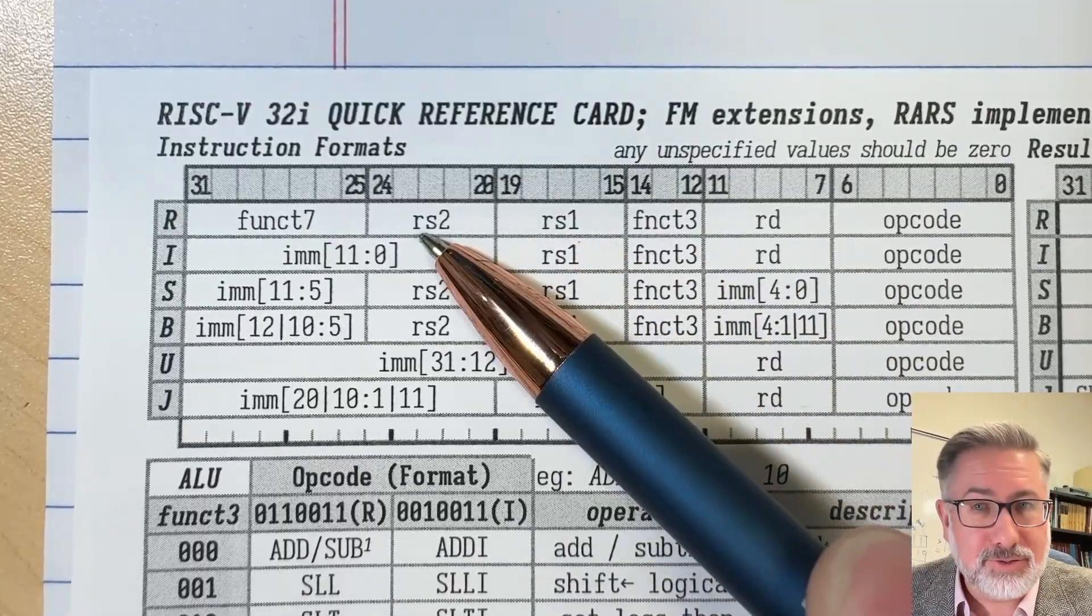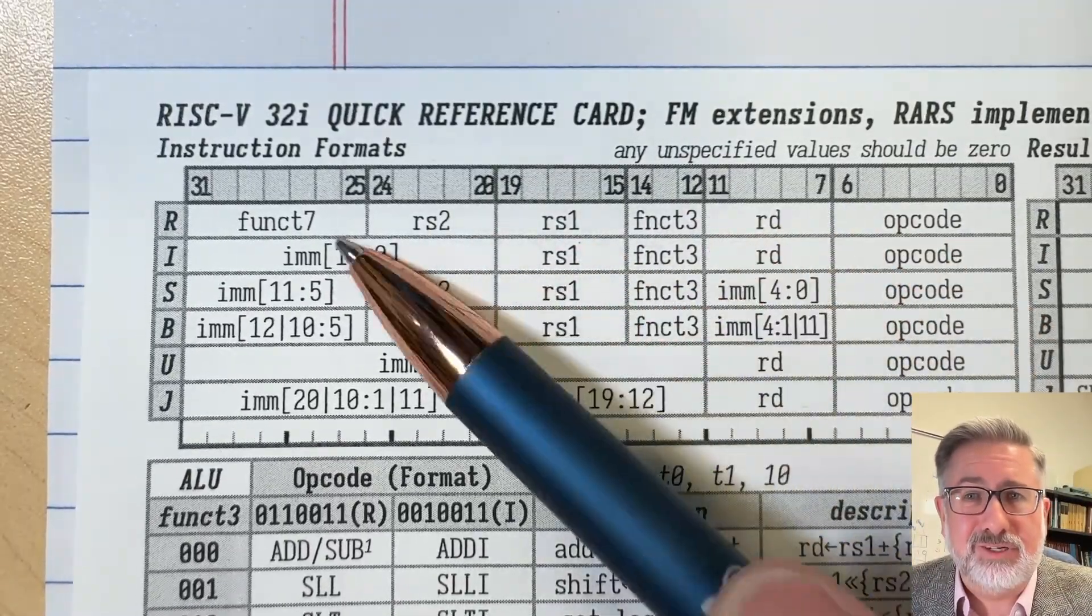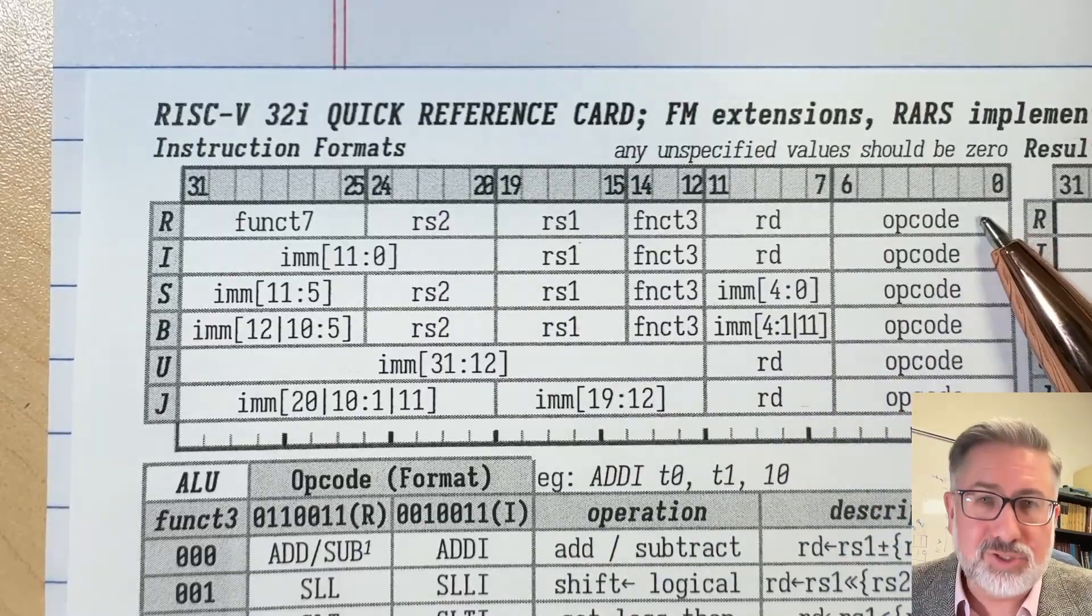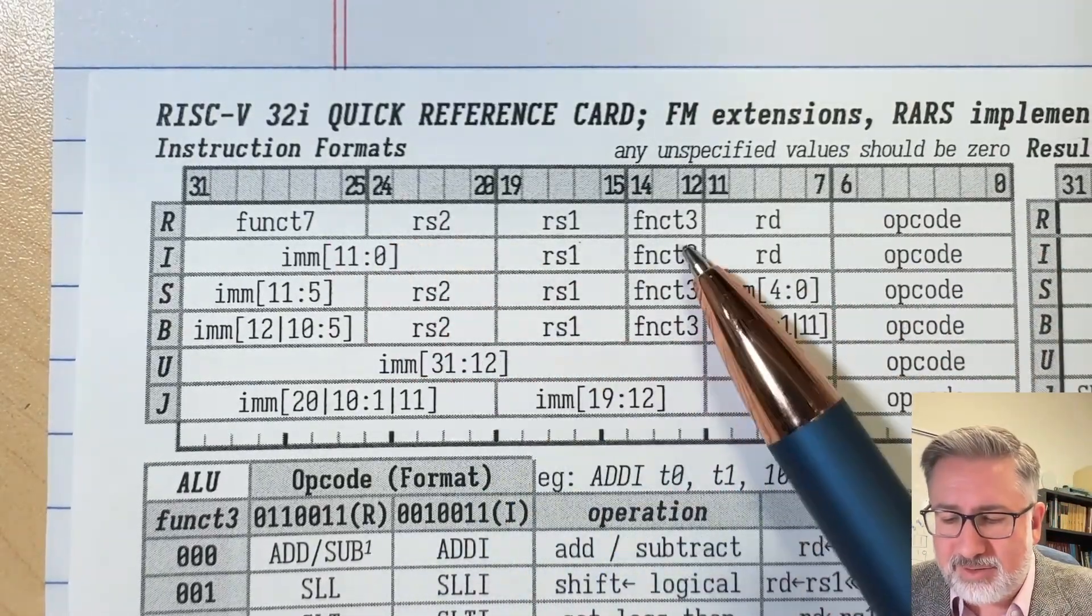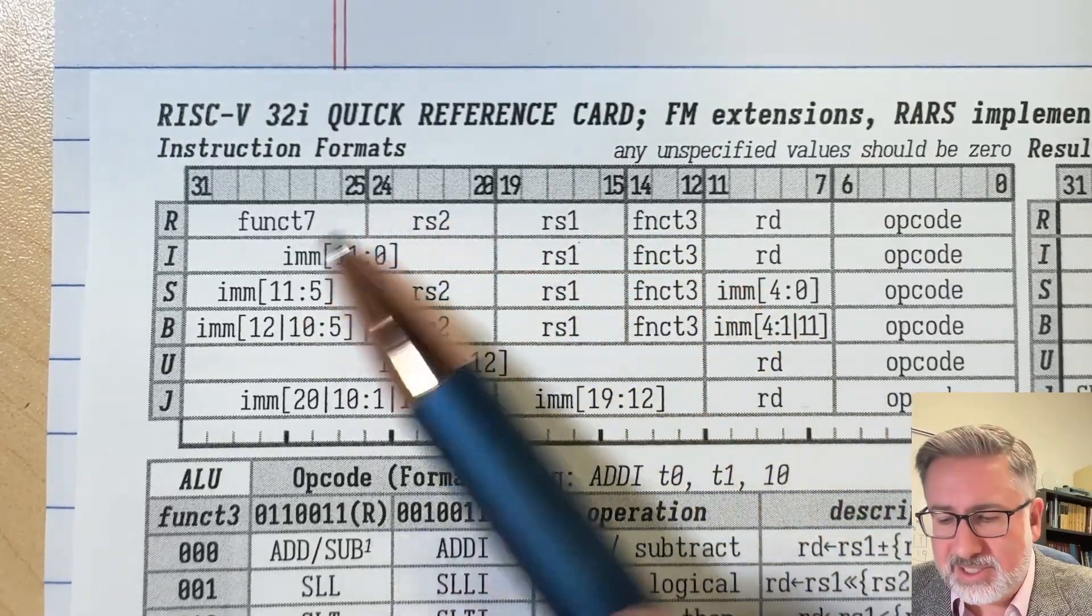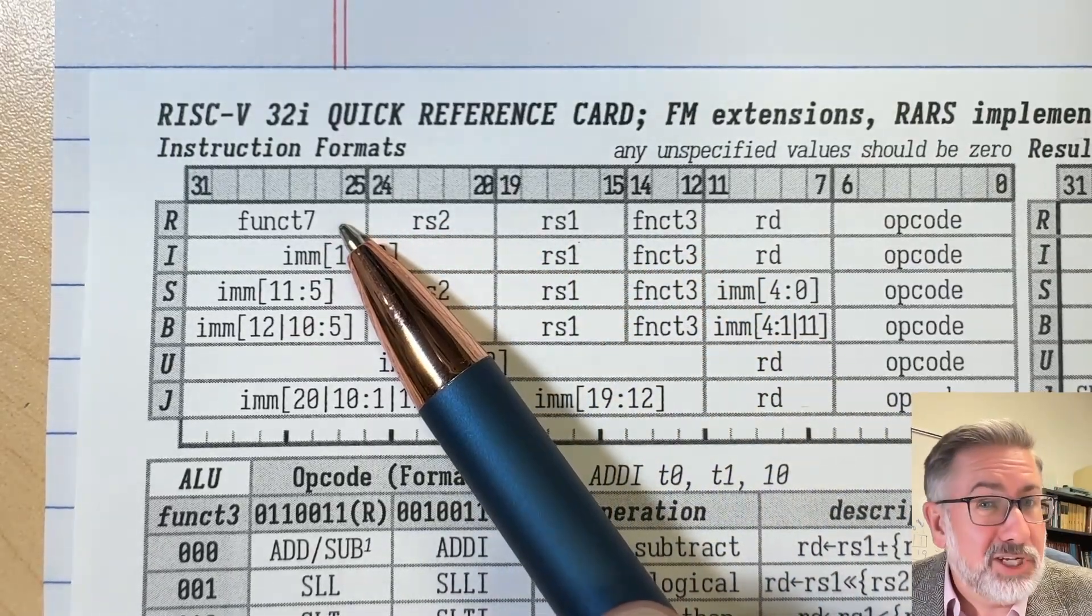And then you've got these other three fields that say what we're going to do. Opcode says what kind of instruction we have. And then function 7 and function 3, this is just a 3-bit function code and a 7-bit function code. These tell you what you're actually going to do.